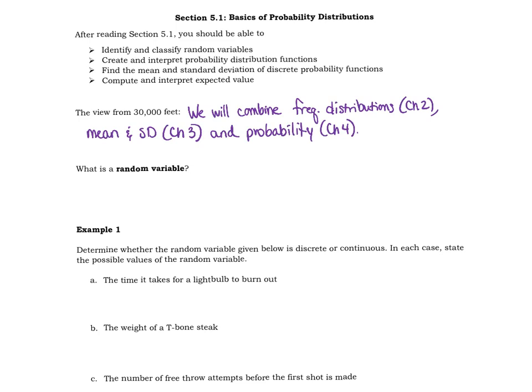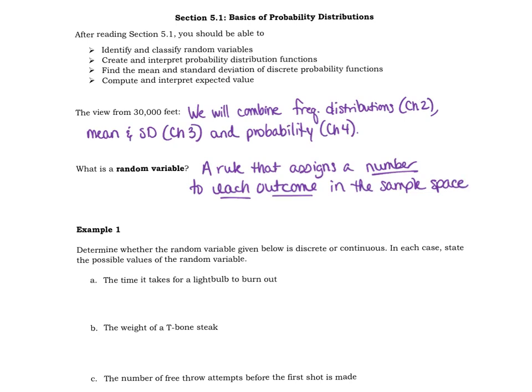So, first thing, what is a random variable? A random variable is a rule that assigns a number to each outcome in the sample space. Okay, so every outcome basically gets a number. Now, that's going to sound a little weird, but it'll hopefully start to make a little bit more sense as we go. I'm going to give you an example, though.